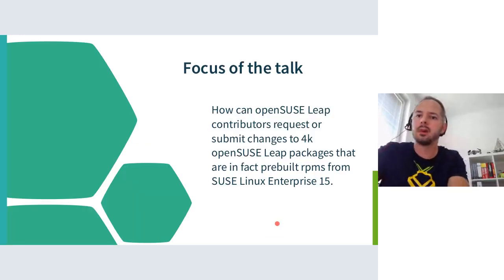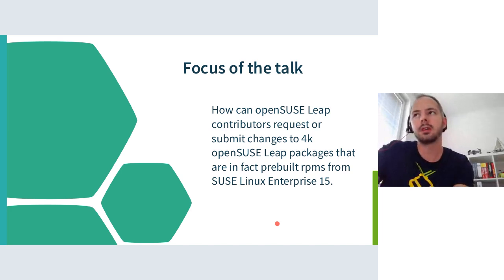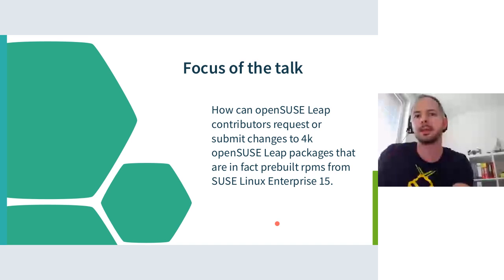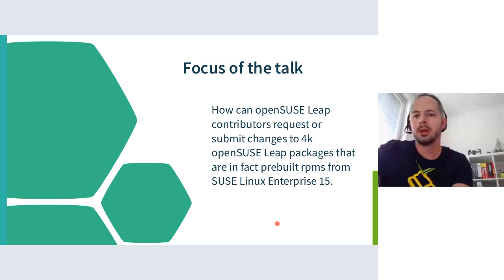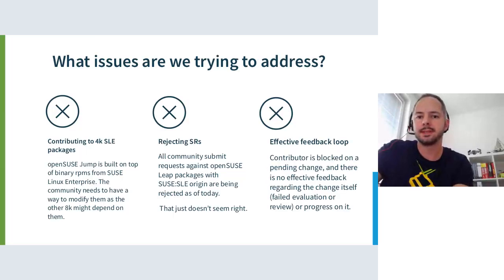The focus of this talk will be mainly about how we update or contribute to about 4,000 packages which will now come as pre-built binaries from SUSE Linux Enterprise into Jump as of today, and into future Leap versions if everything goes well. Nothing more than that — this is the scope.